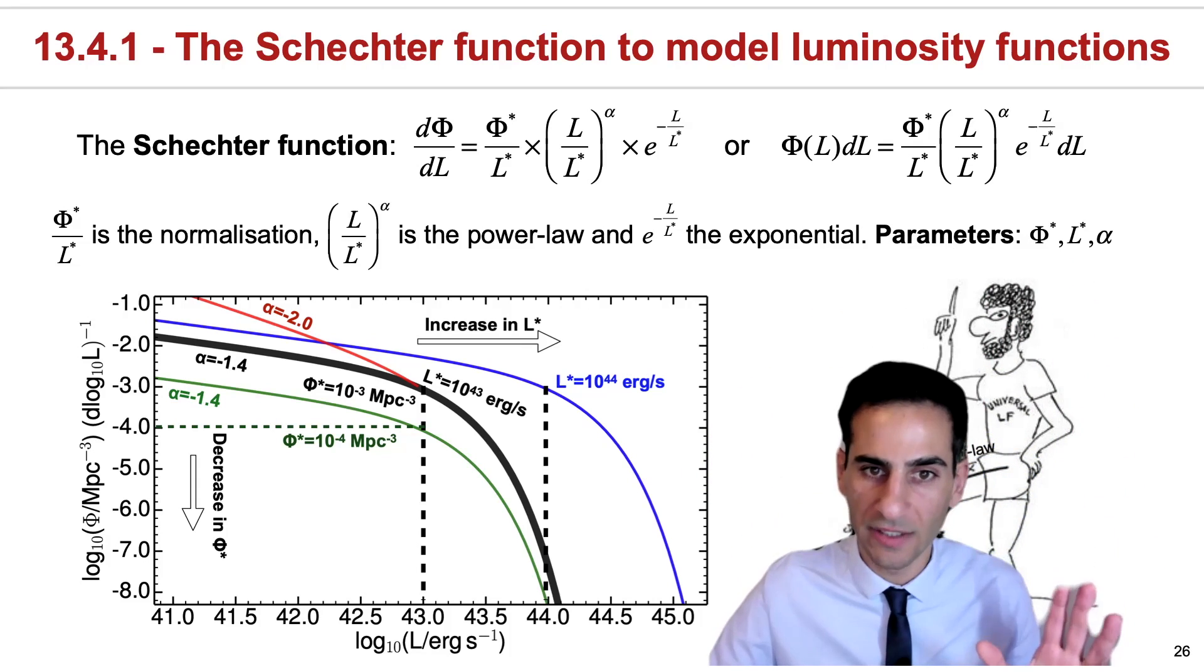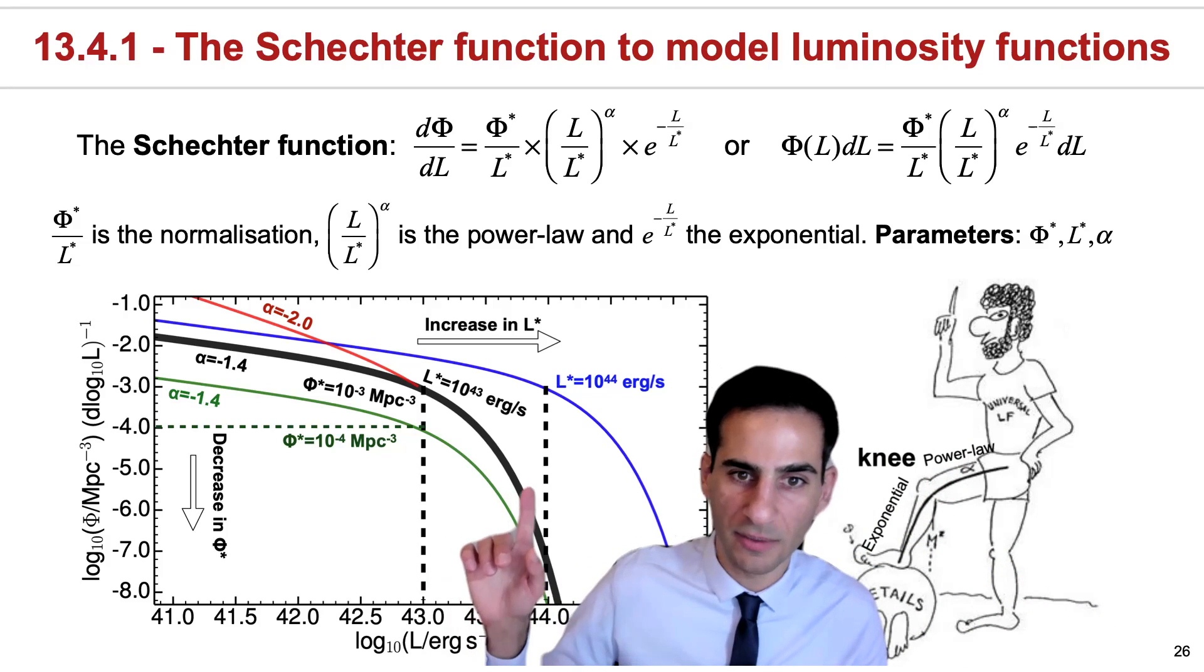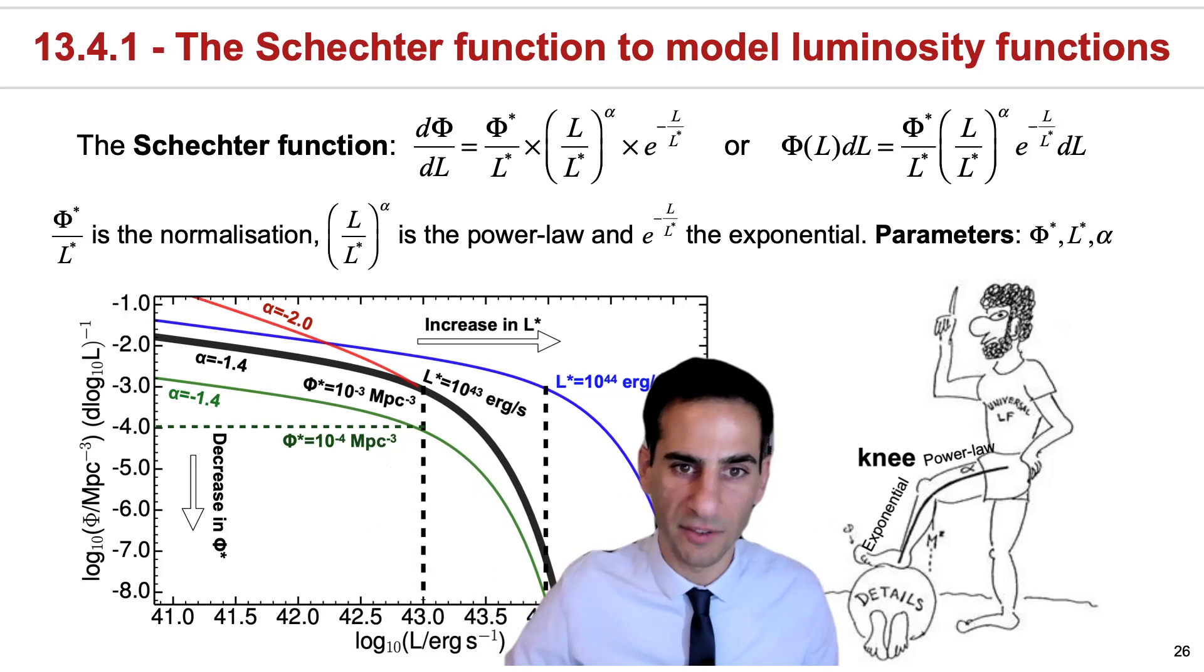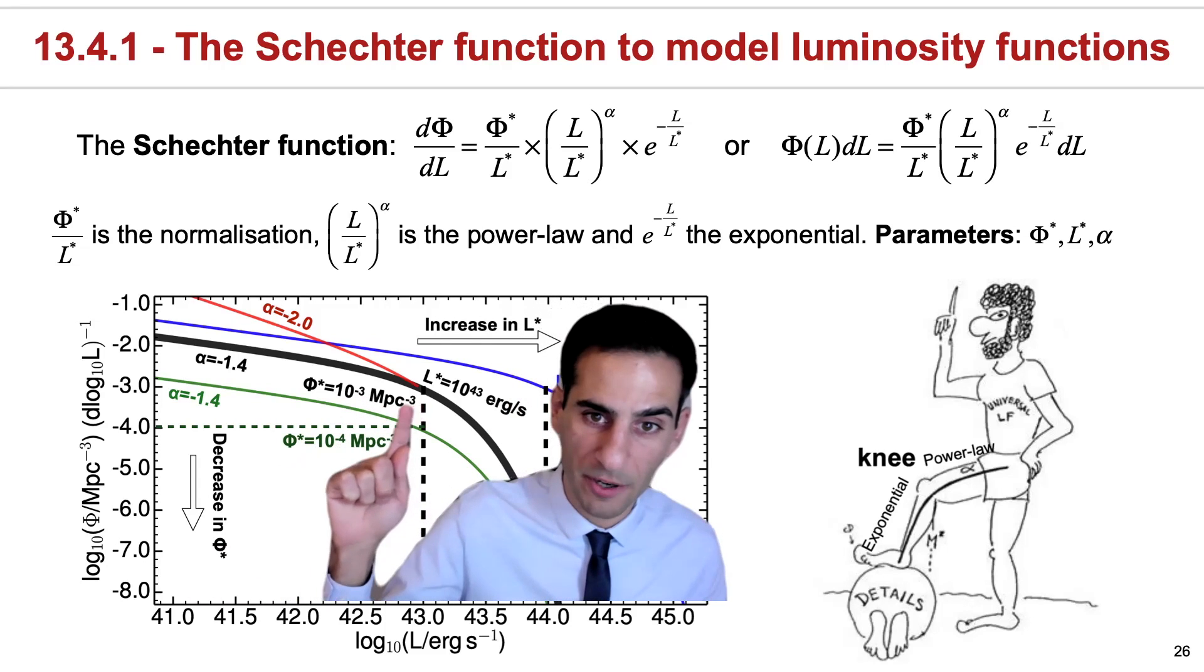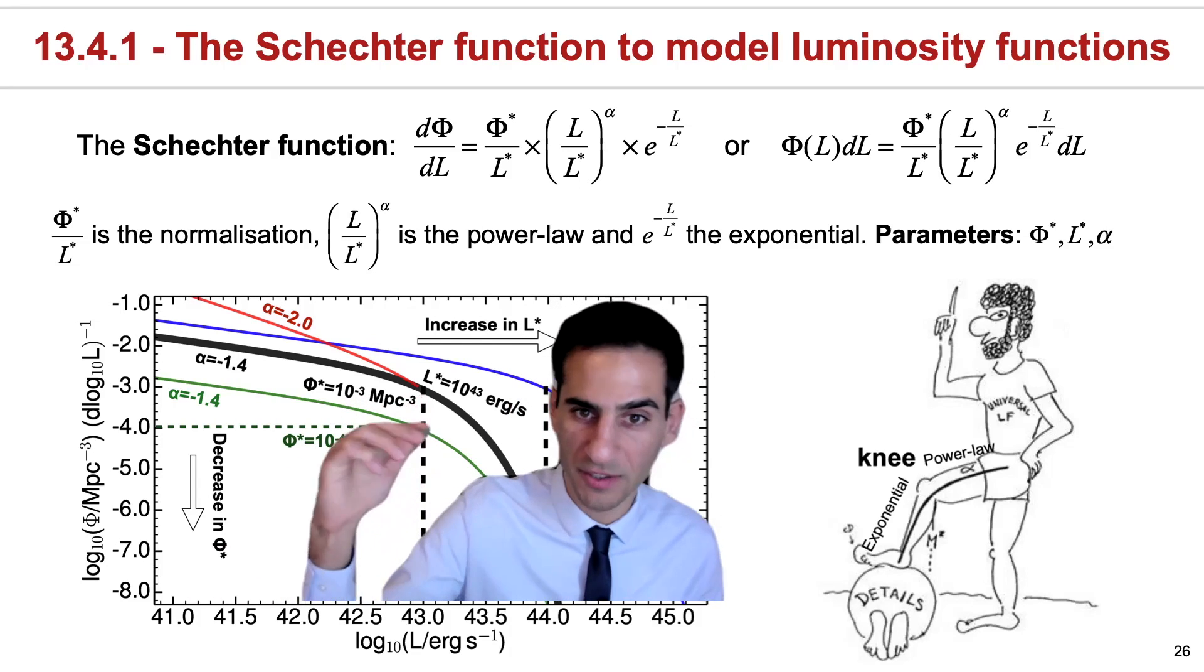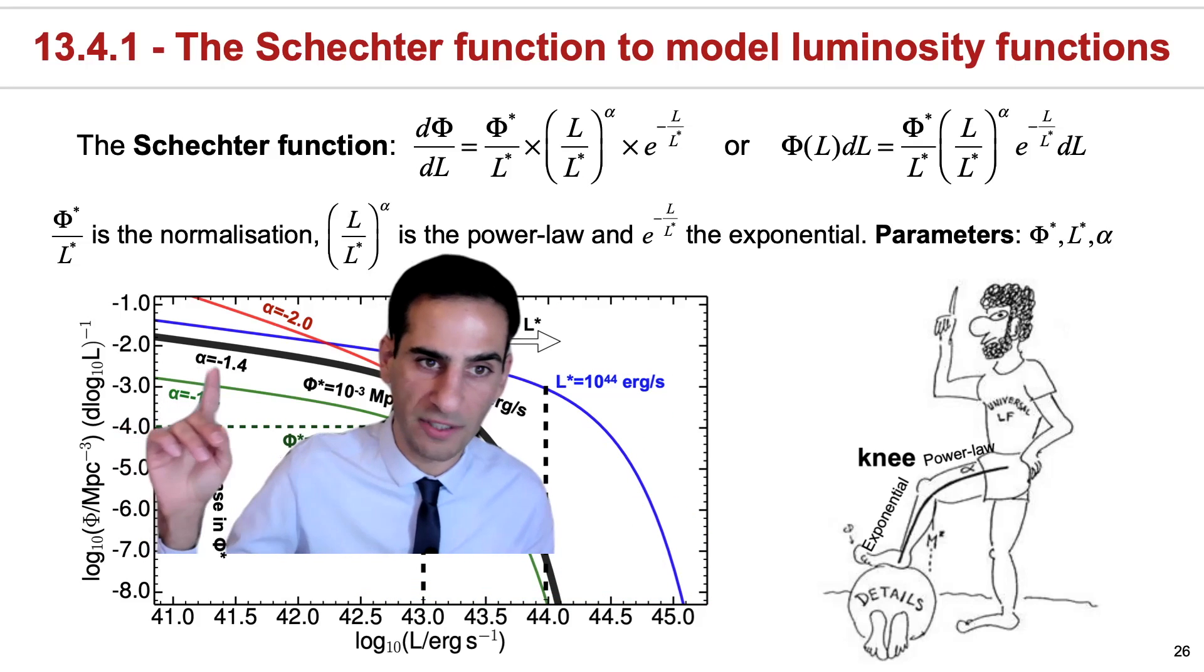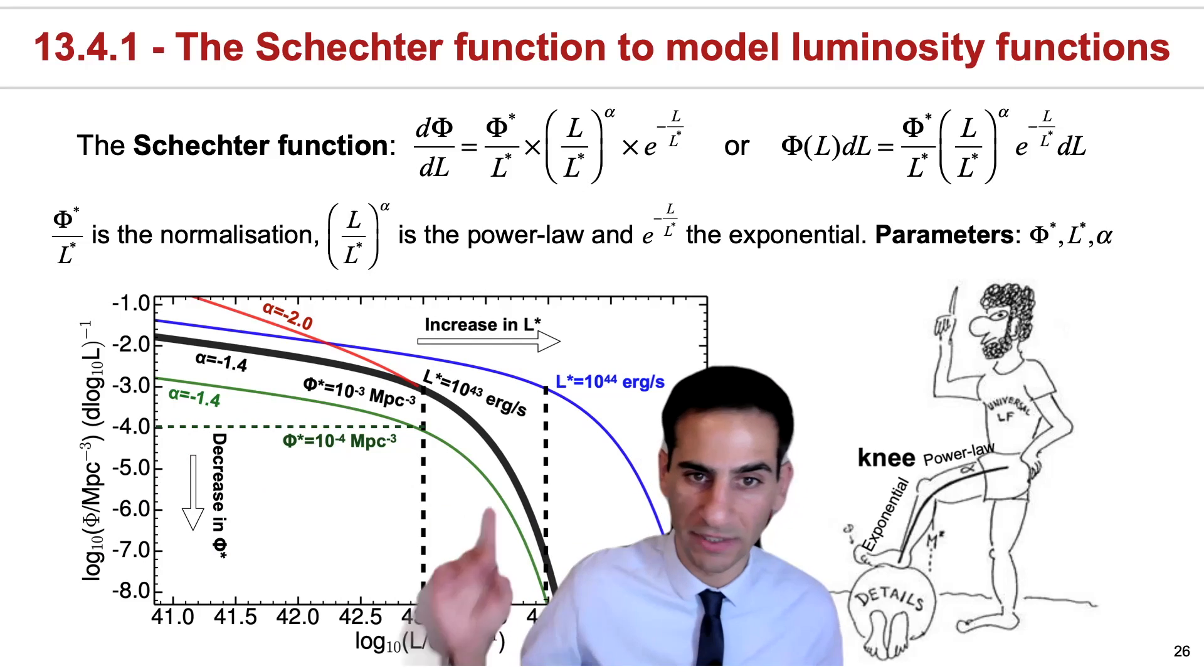Now, if you plot the Schechter function, it will look pretty much like this. You can focus on the black line being some sort of reference. If you were to give these parameters, L star being 10 to the 43 erg per second and phi star 10 to the minus 3 megaparsec to the minus 3, so this is one over volume, and with a specific power law, in this case minus 1.4, the Schechter function would look like this.